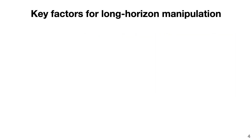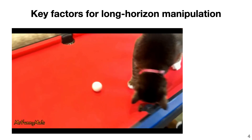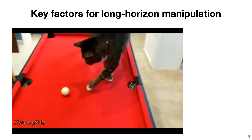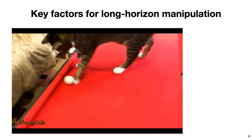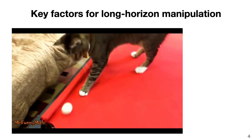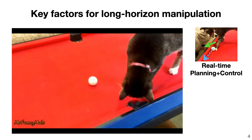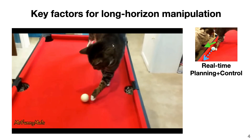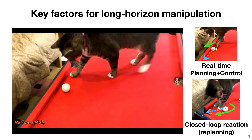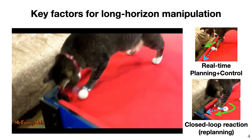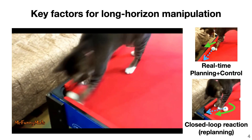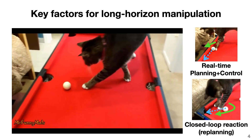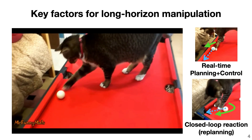So what makes a long horizon task hard? Just as this video shows, to achieve the long-term goal of pushing the ball into the hole, the cat is performing real-time planning and control to continuously adjust the direction of the ball's movement. When unexpected situations happen, the cat also quickly reacts and replans to solve the task. Seemingly, these two factors are important for long horizon manipulation.